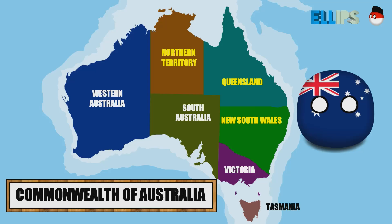In 1850, people in Australia were freed to form colonies. However, it remained under British rule. On January 1, 1901, the colonies in Australia formed a federation, and the Commonwealth of Australia was founded.